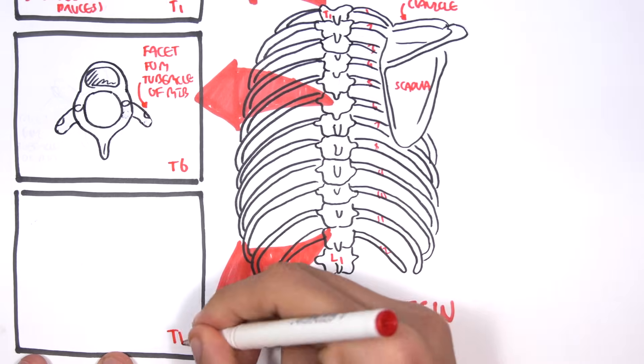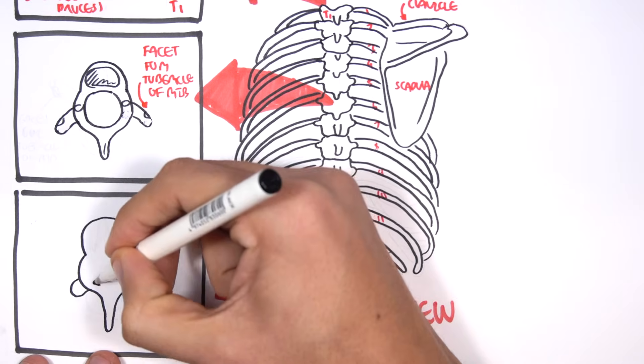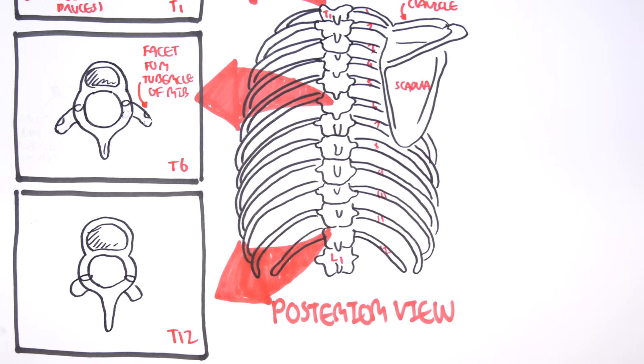Finally, we have T12. Very much the same with other thoracic vertebrae, but T12 especially becomes bigger when we go towards the lumbar vertebrae.